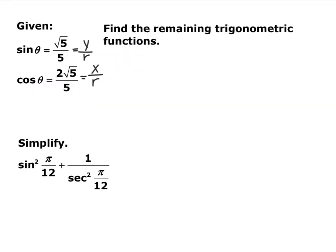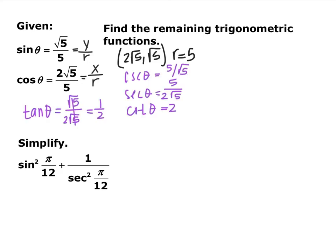Now, given two trig functions, find the other four. They give you sine, which is y over r, and cosine, which is x over r. From this information we can determine a coordinate point of (2√5, √5) and a radius of 5. Pause the video and find the other four trig functions. Tangent is y over x, giving 1/2. The reciprocals give cotangent equals 2, secant equals 5 over 2√5, and cosecant equals 5 over √5.